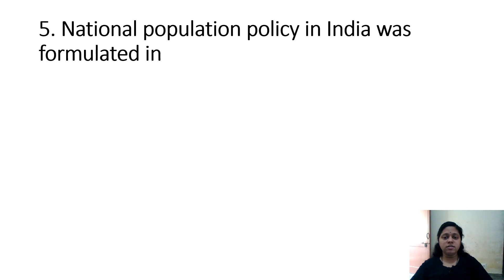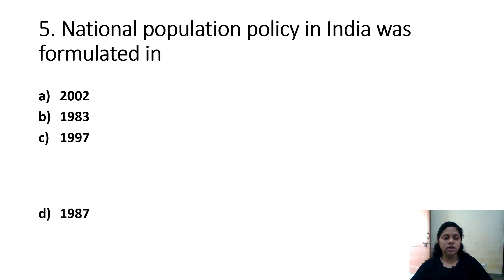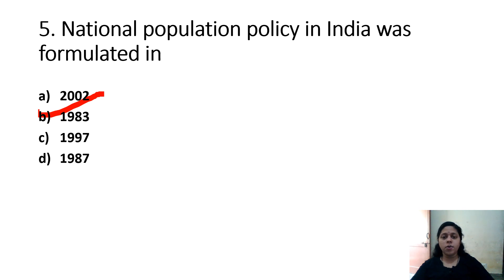National Population Policy in India was formulated in — Option A: 2002. Option B: 1983. Option C: 1997. Option D: 1987. Correct answer is Option B — 1983. India's first National Population Policy was approved by Parliament in 1983.